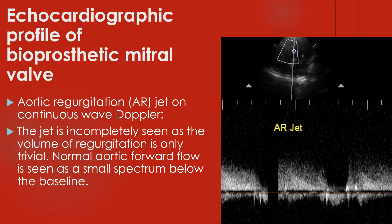Aortic regurgitation jet on continuous wave Doppler. The jet is incompletely seen as the volume of regurgitation is only trivial. Normal aortic forward flow is seen as a small spectrum below the baseline. Continuous wave interrogation is used because the velocity of an aortic regurgitation jet is much above the Nyquist limit of the pulsed Doppler system. Continuous wave Doppler can evaluate high velocity jets but cannot localize the exact site of the jet along the axis.